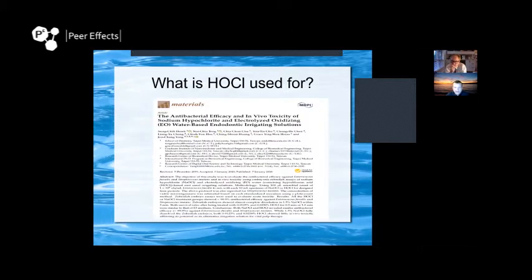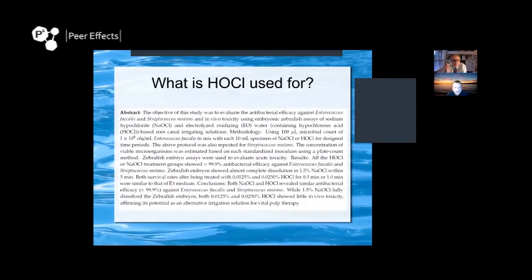One study compared sodium hypochlorite with hypochlorous acid — electrolyzed oxidizing water-based solutions. The conclusion: both sodium hypochlorite and HOCl showed similar antibacterial efficacy against E. faecalis and Strep mutans. While sodium hypochlorite dissolves tissue, HOCl showed little toxicity. It also shows potential as an alternative irrigant in vital pulp therapies — if you don't want to kill the pulp but want to disinfect it, HOCl can work.